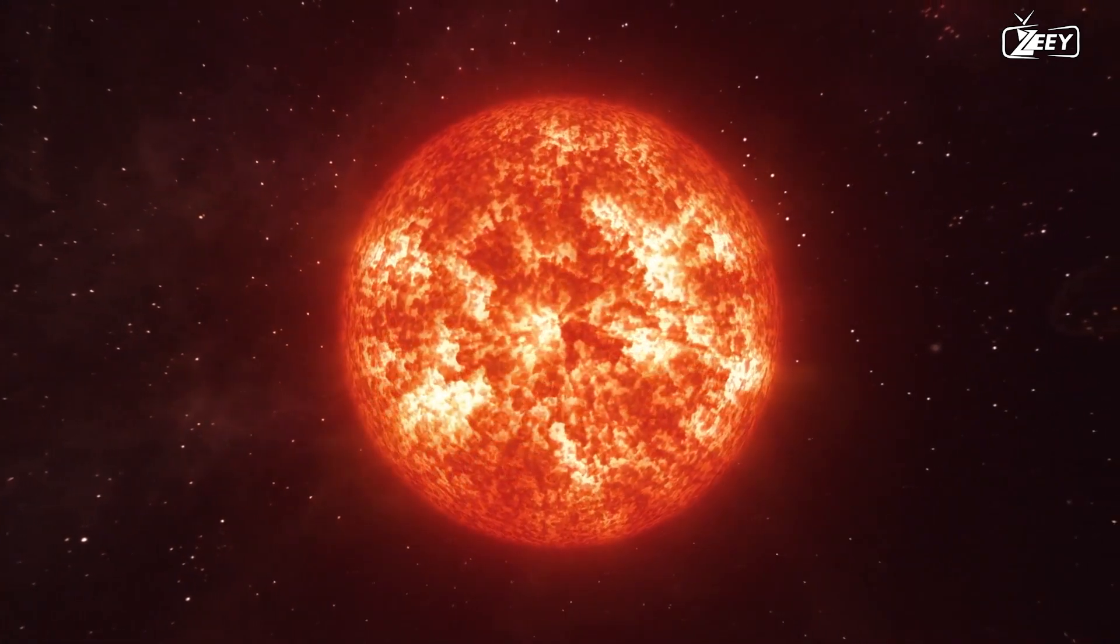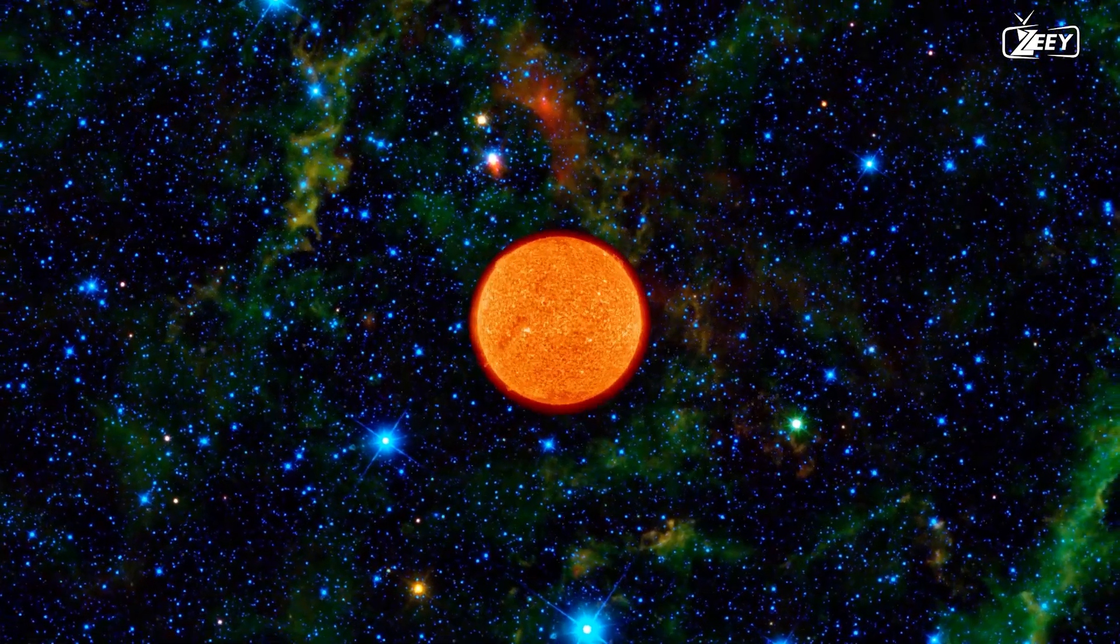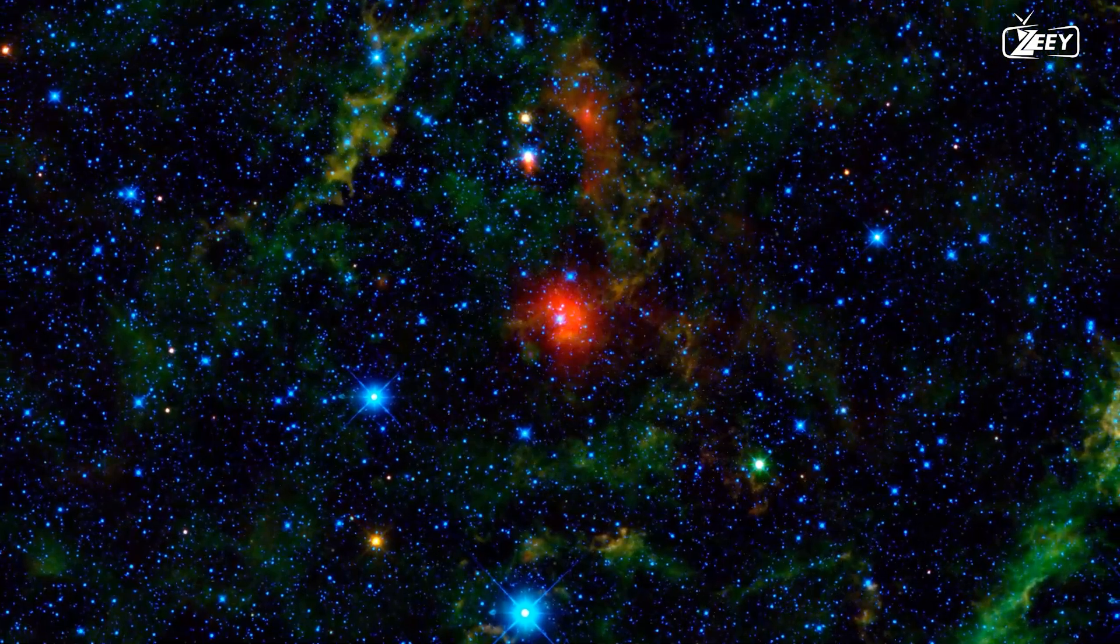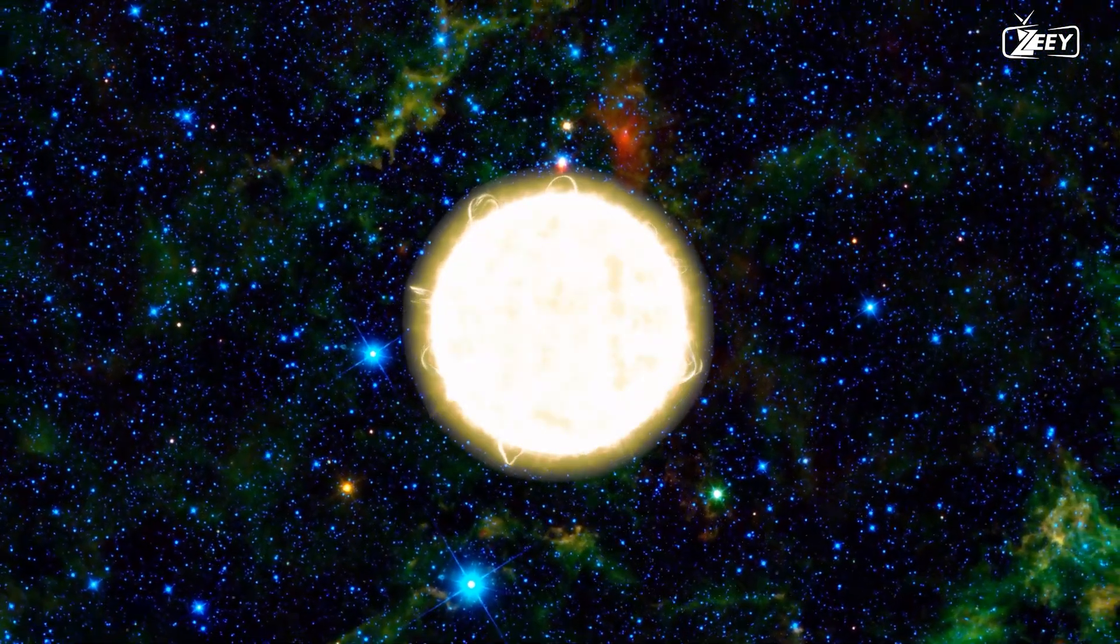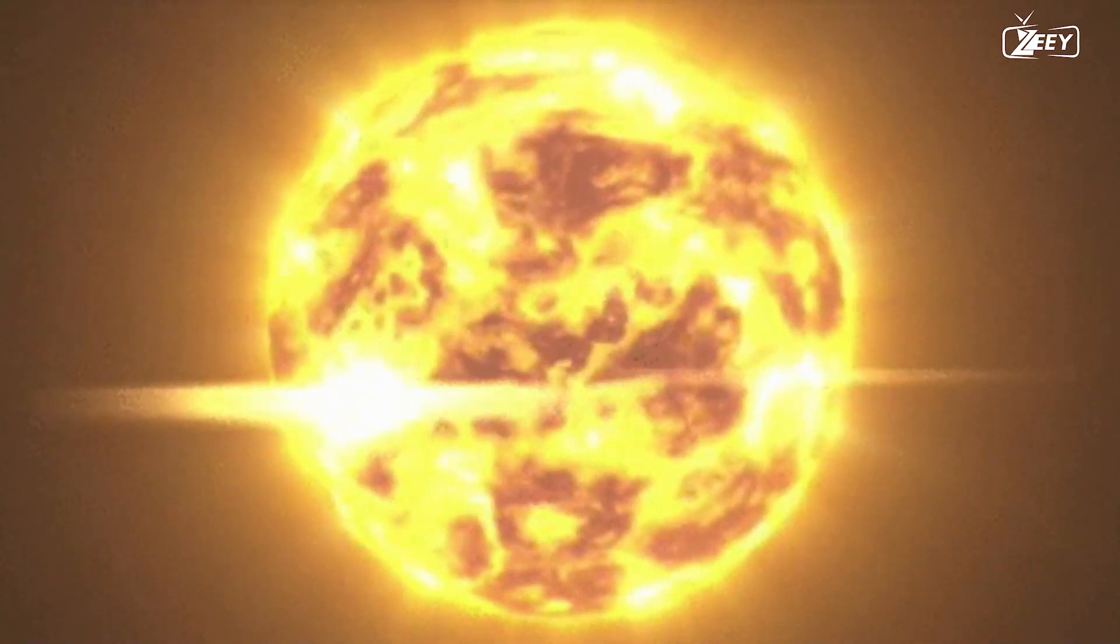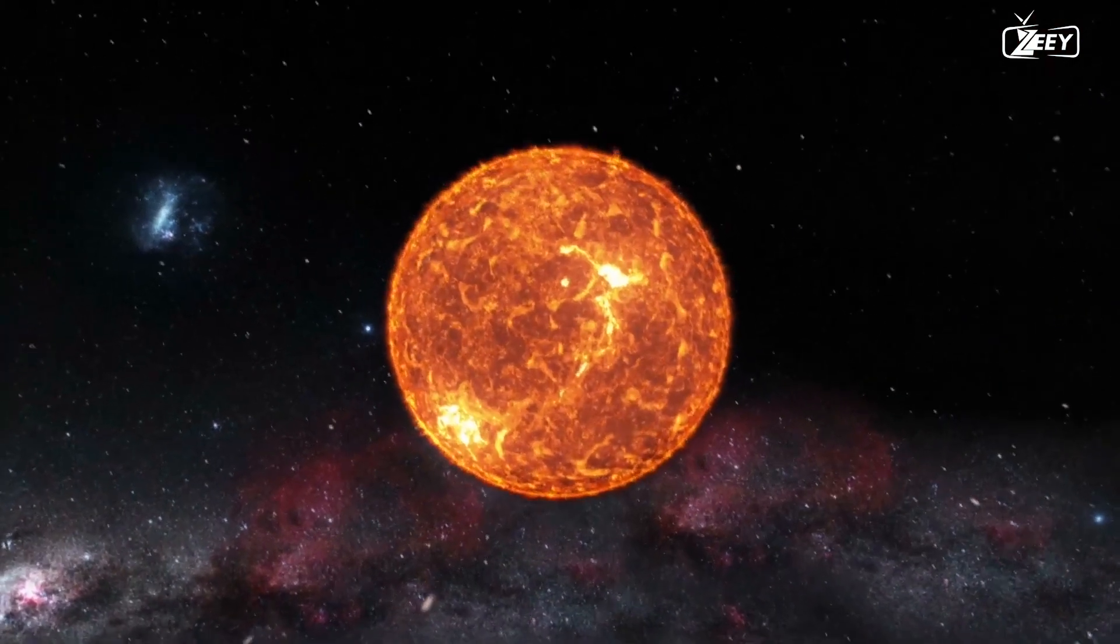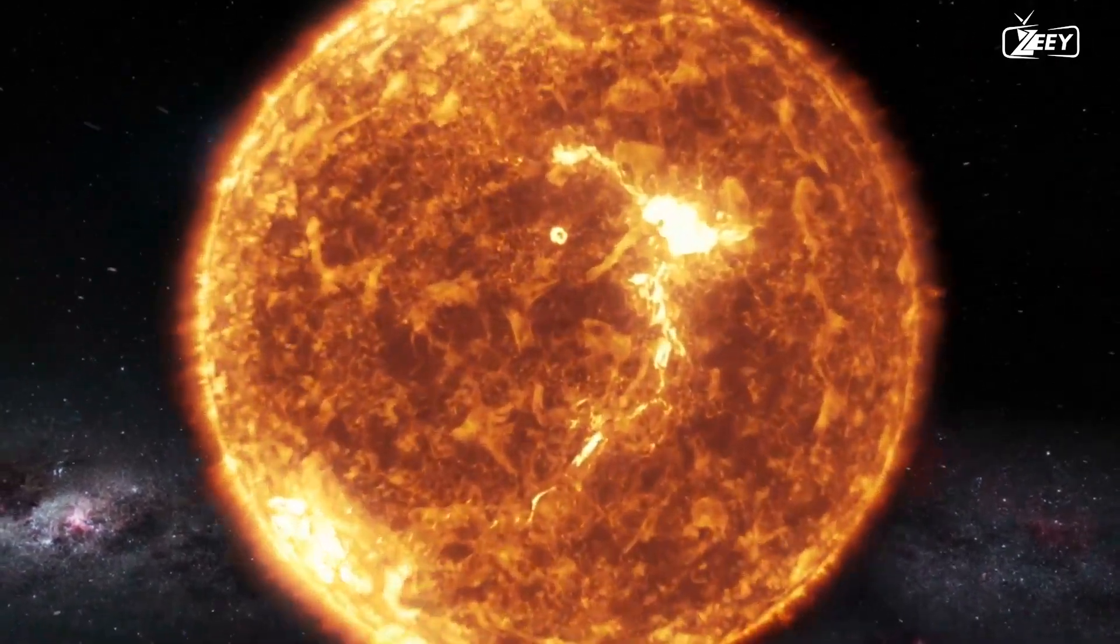Its radius is estimated to be 1,000 times that of the sun. To put that into perspective, if we replace the sun with Betelgeuse, its surface would reach beyond Mars' orbit. Because of its enormous size, it is one of the biggest stars ever discovered. But size isn't the only thing that distinguishes Betelgeuse.